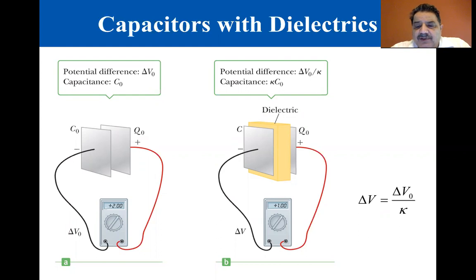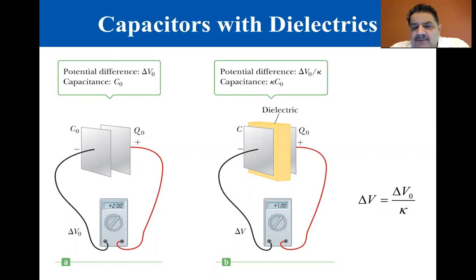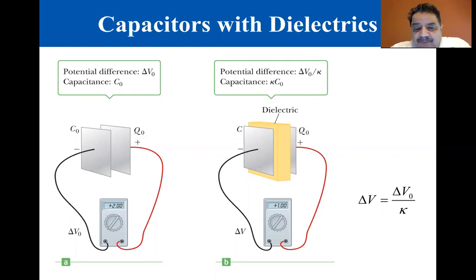When a dielectric is inserted between the plates of a capacitor, the capacitance increases. If the dielectric completely fills the space between the plates, the capacitance is multiplied by the factor kappa, called the dielectric constant.